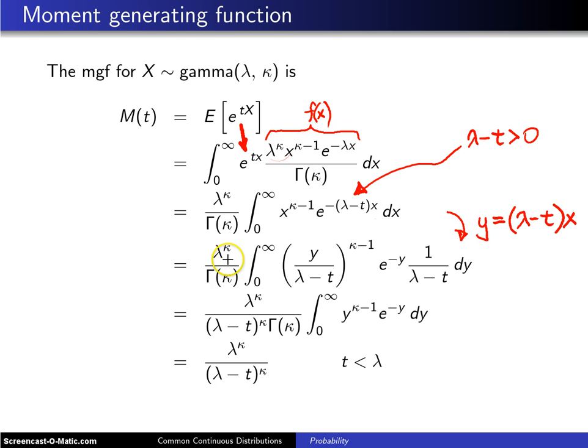Notice we have lambda to the kappa and gamma of kappa out front again. You will notice that you can also pull out in this case a lambda minus t raised to the kappa power because that doesn't involve y and now we have this right here.